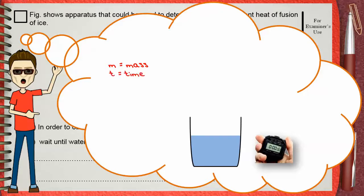Now you have the time t on the stopwatch and you have the power of the heater that you used. Using the rule: LF equals Q over m equals P times t over m.